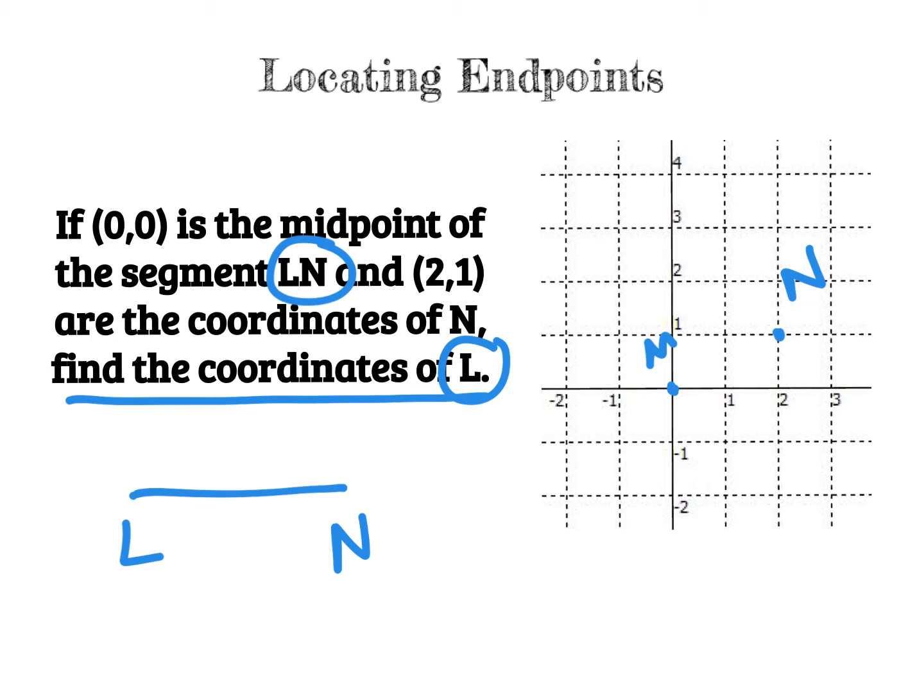And to do that, we're going to use slope or rise over run. So I'm going to count how far away I am from the midpoint, which is up 1 over 2. And I'm going to use that same amount to locate the other point. Up 1 over 2. And that's how I find L. Whatever distance or whatever measurement I have here, however far it travels, it has to be reflected onto the other side. Because M is the middle. So if N is up 1 over 2, then L should also be up 1 over 2 from the middle.